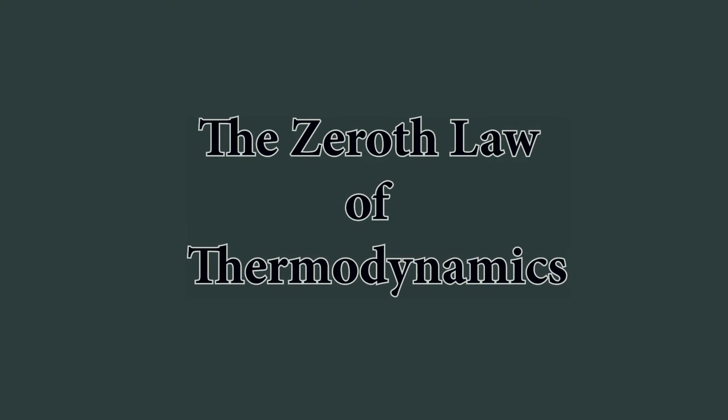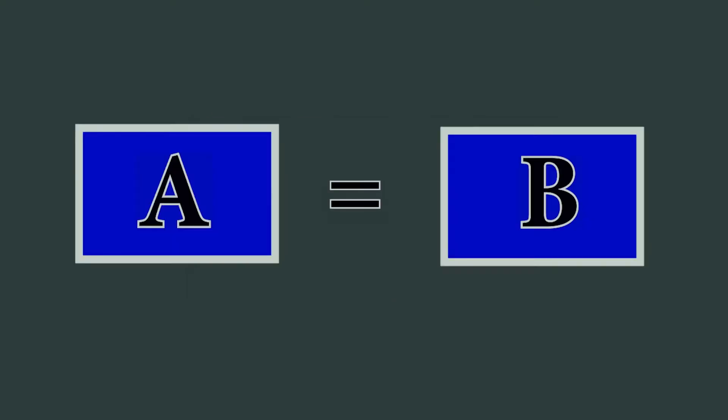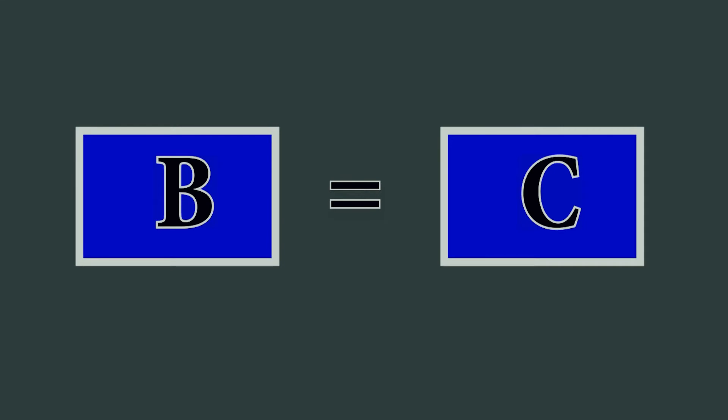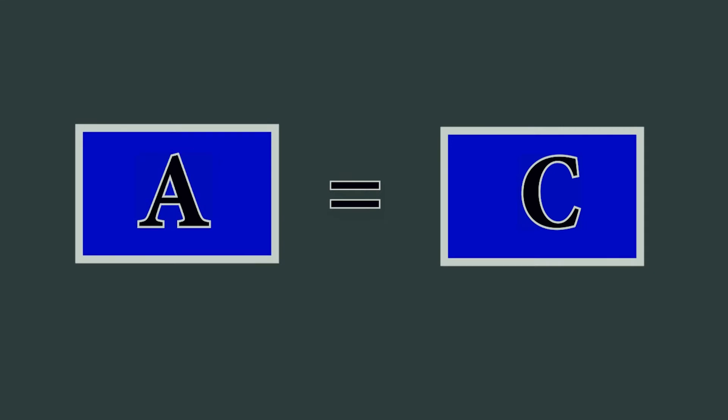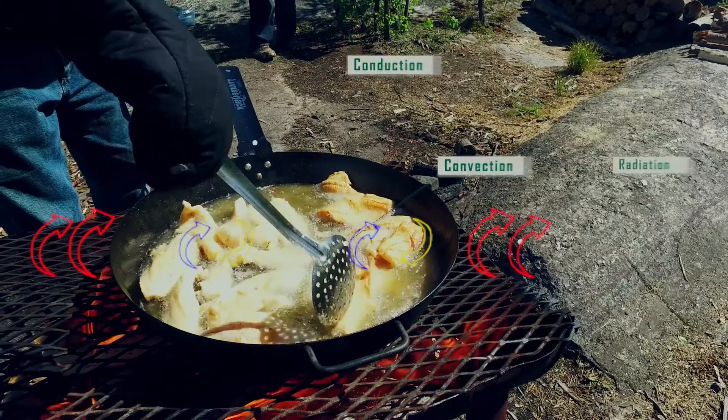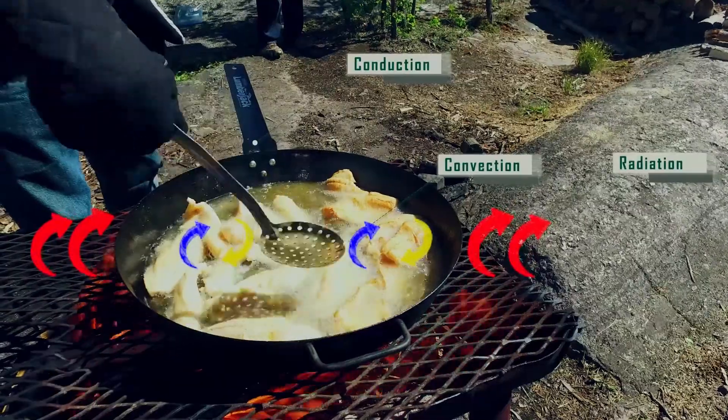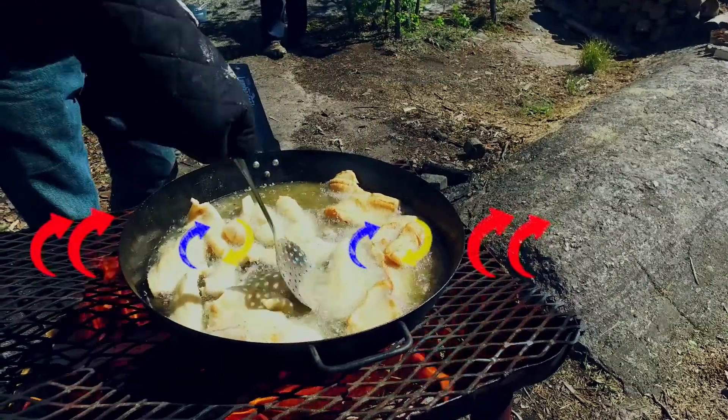The zeroth law of thermodynamics states that if system A and B are initially at thermal equilibrium, and B is found to be in thermal equilibrium with C, then A and C are also in thermal equilibrium. There are three methods of heat transfer.